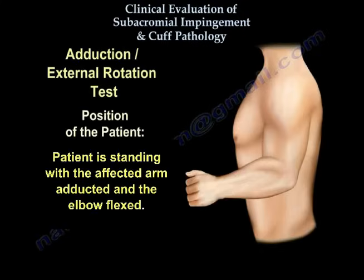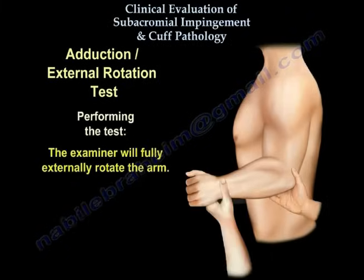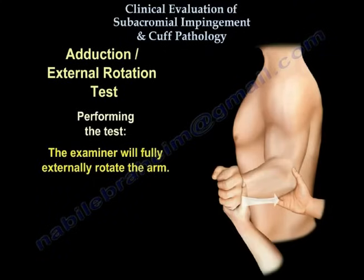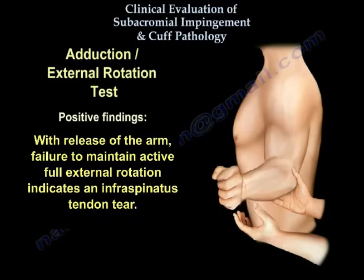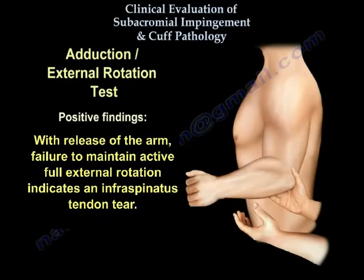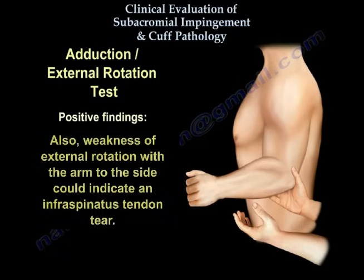The adduction external rotation test. The patient is standing with the affected arm adducted and the elbow flexed. The examiner will fully externally rotate the arm. With the release of the arm, failure to maintain active full external rotation indicates an infraspinatus tendon tear. Also, weakness of external rotation with the arm to the side could indicate an infraspinatus tendon tear.